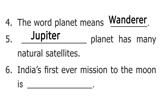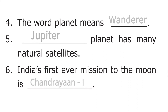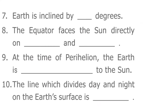The sixth question is: India's first ever mission to the moon is. The answer is Chandrayaan first. The seventh question is: Earth is inclined by dash degrees. The answer is 23 and a half.